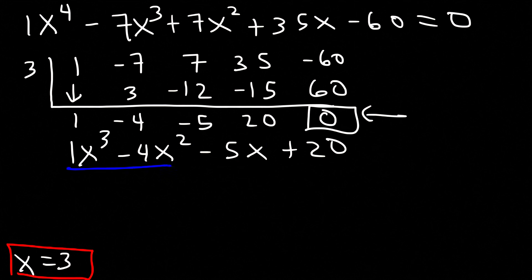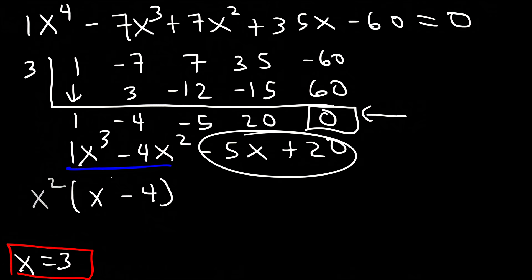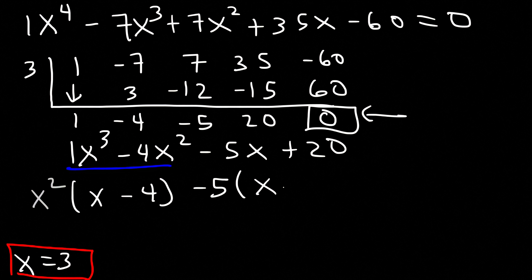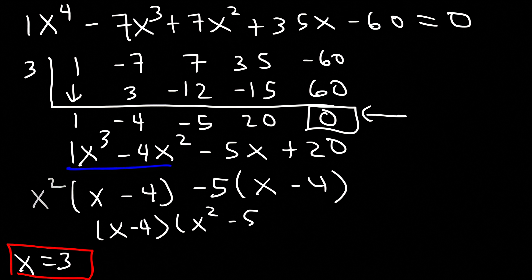Let's take out the GCF, which is x squared. x cubed divided by x squared is x, and negative 4x squared divided by x squared is negative 4. Then let's take out a negative 5: negative 5x divided by negative 5 is x, and 20 divided by negative 5 is negative 4. So it's going to be x minus 4 times x squared minus 5, all equal to 0.